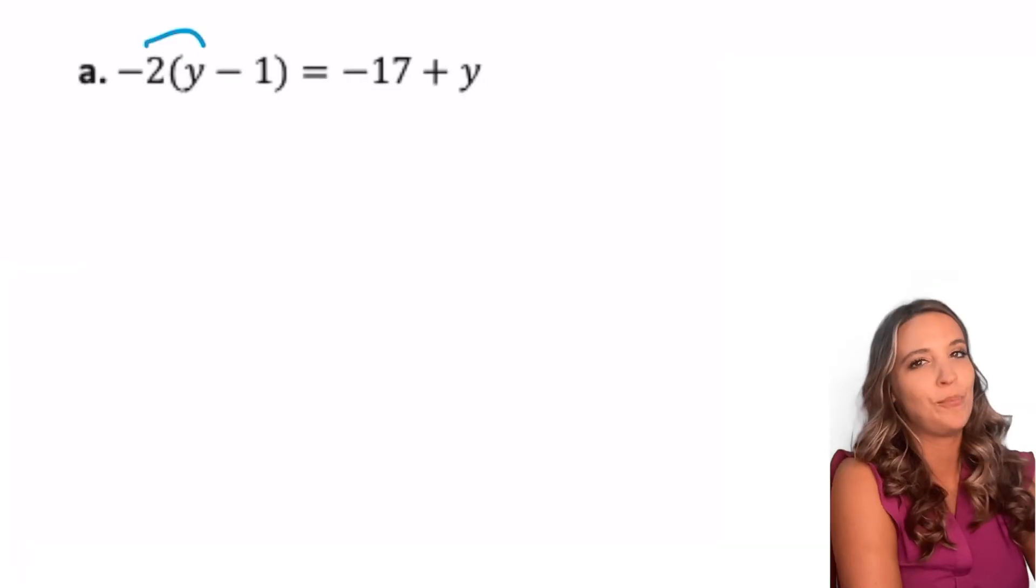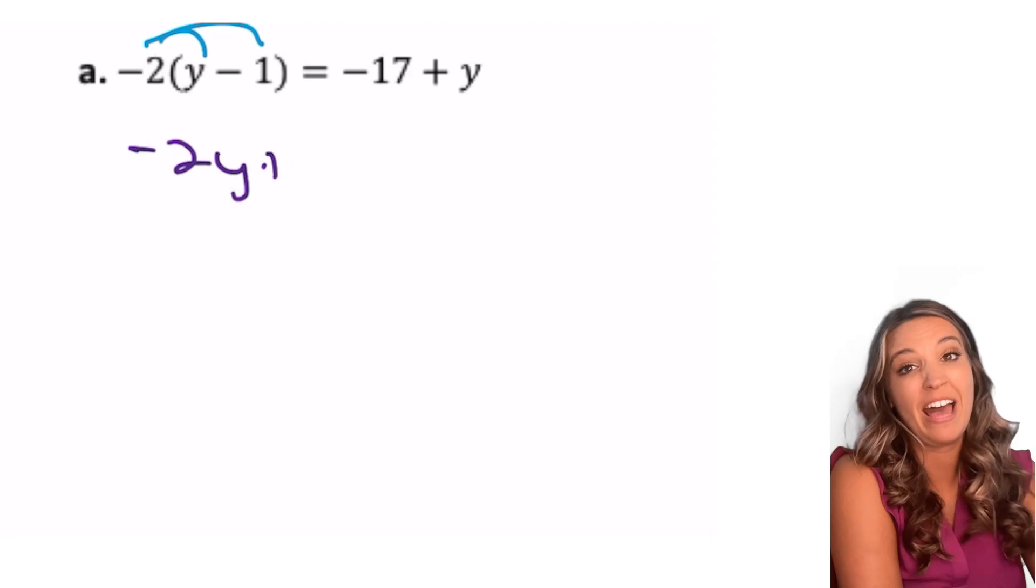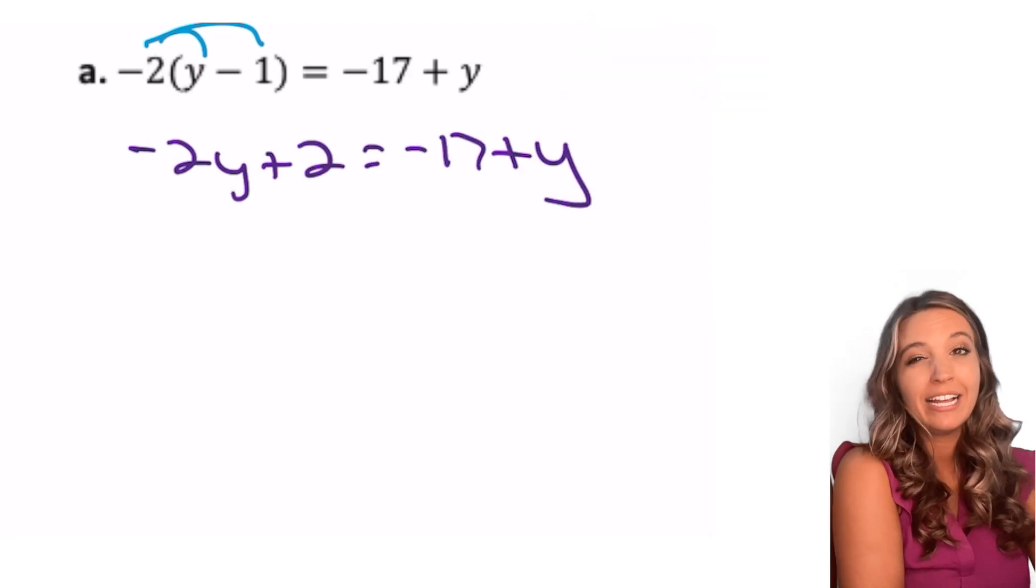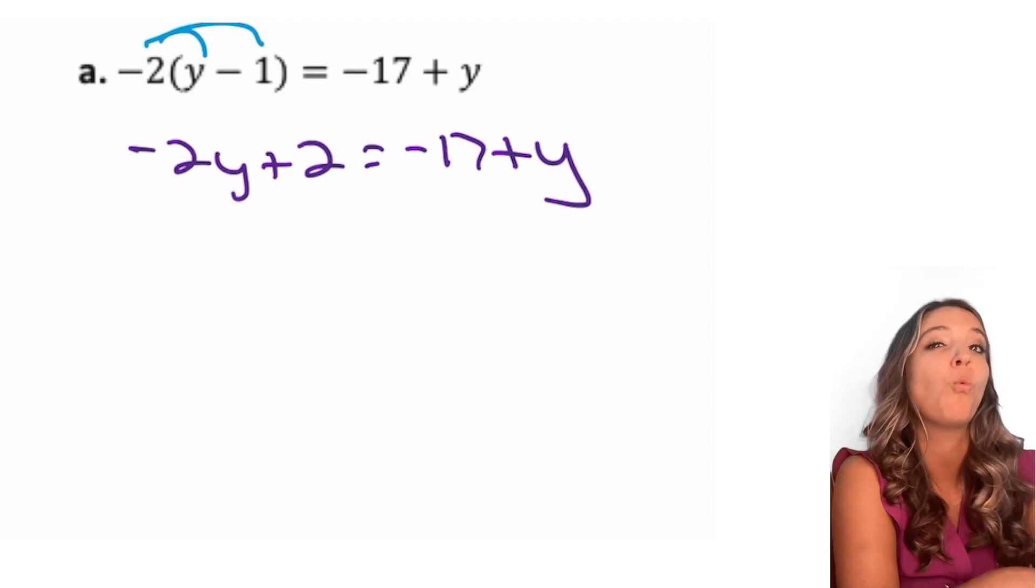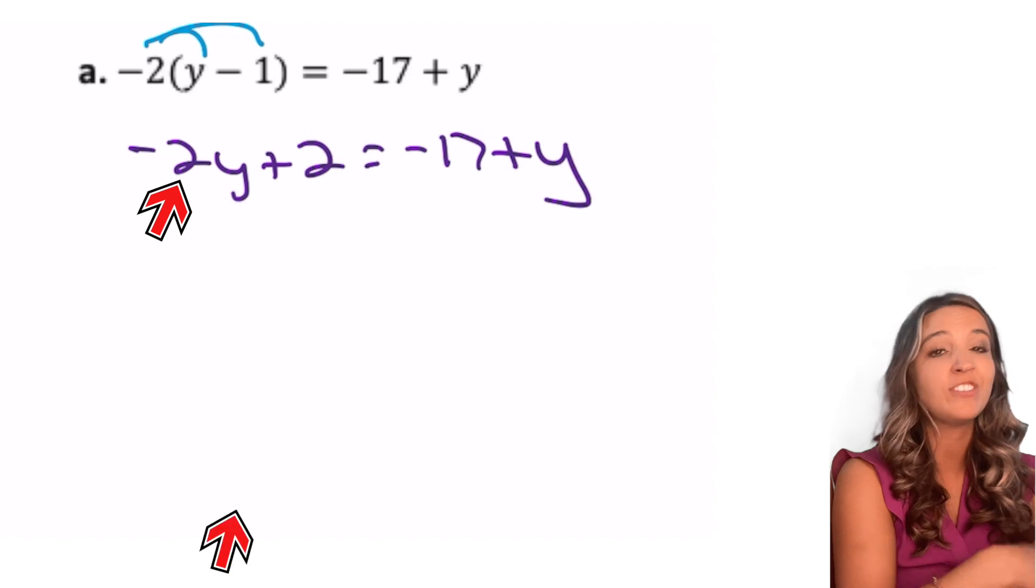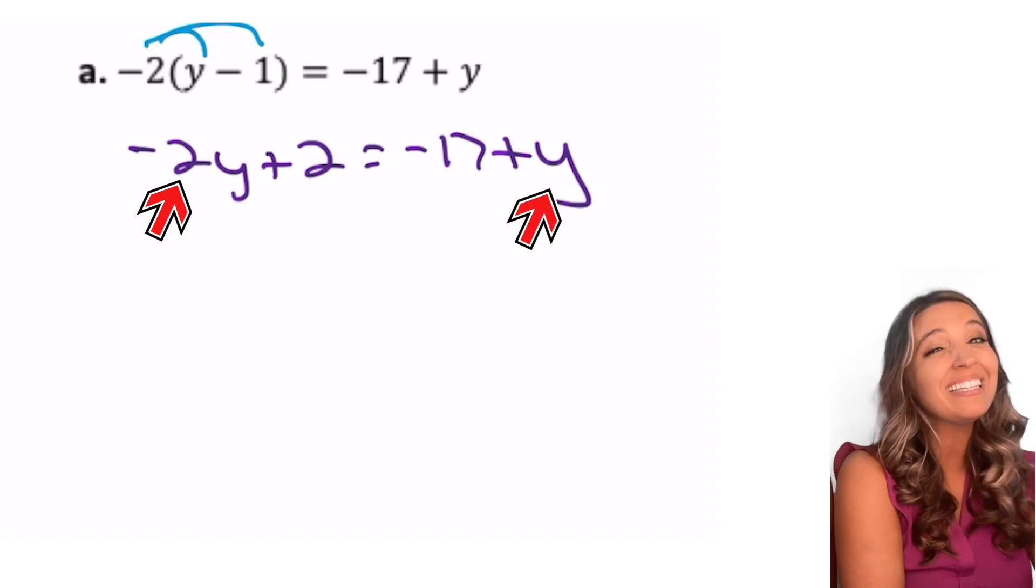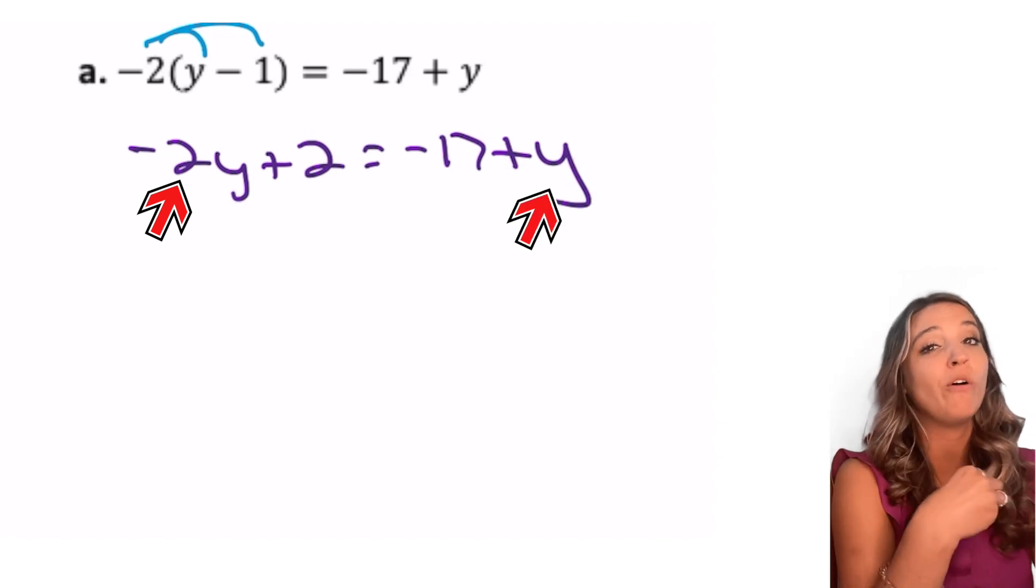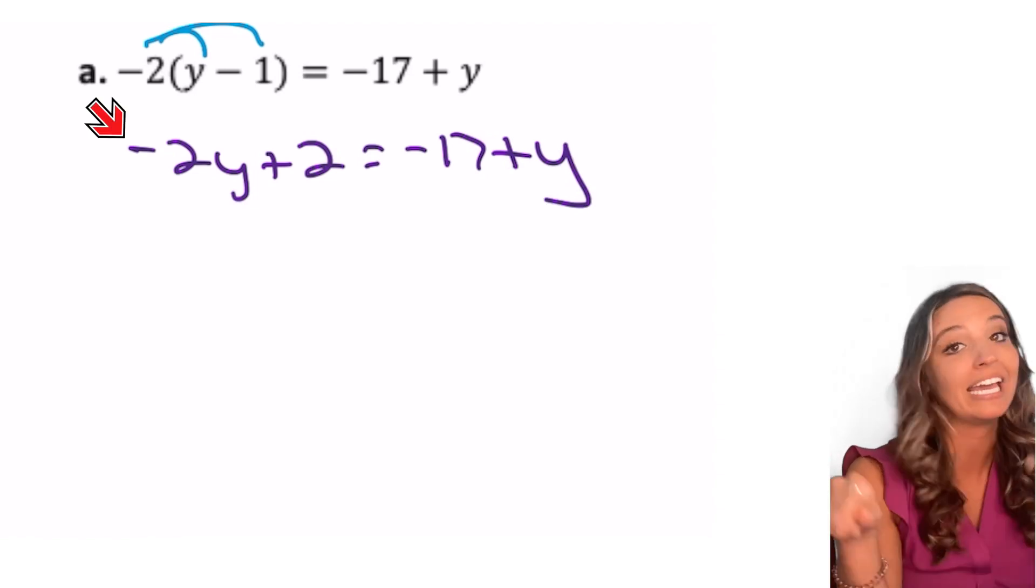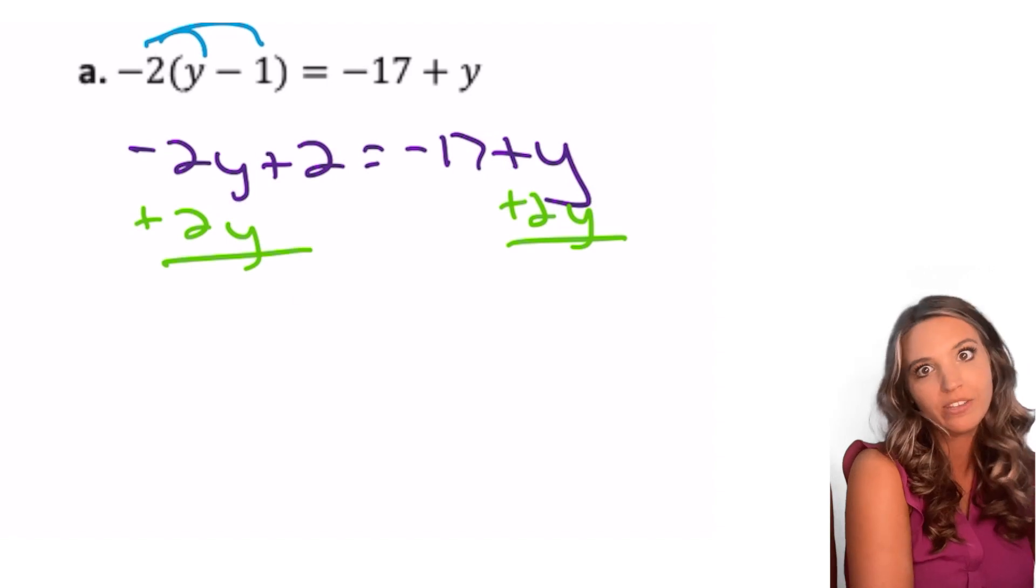Let's give it a go. First example, let's distribute right off the bat. Then we want to clean up each side of the equation. That looks good. Now I want to move my variable to one side. Which side? Well, I've got negative two y on the left and y on the right. We see less mistakes when we can keep the coefficient on the variable positive. So I'm going to move the two y by adding it to the right side, both sides.